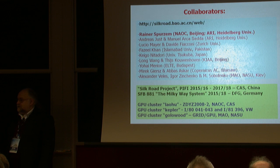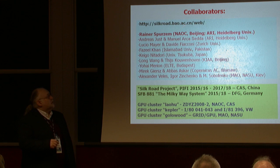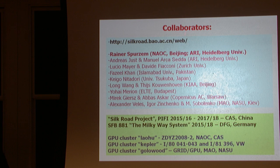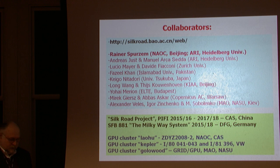My main collaborators over the past 10-plus years include Rainer Spurzem, who now has a double affiliation at NAOC Beijing and the Astronomisches Rechen-Institut at Heidelberg University, and a list of others from ARI: Andreas, Manuel from Zurich, Lucio Meyer, Fazil Khan from Pakistan — a long-time collaborator — Keigo Nitadori from Japan, who we've constantly worked with on code for the last 10 years, some students and postdocs from Beijing, Yochai from Budapest, Mirek and Abbas from Warsaw, and my local collaborators in Kyiv: Alexander, Igor, and Margarita.